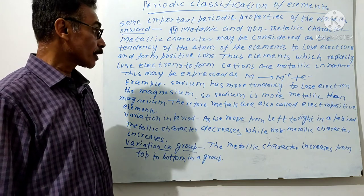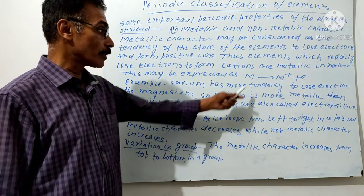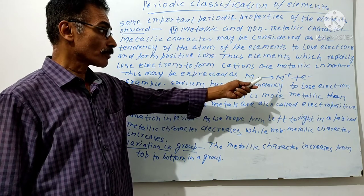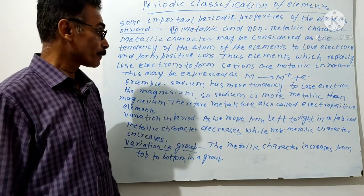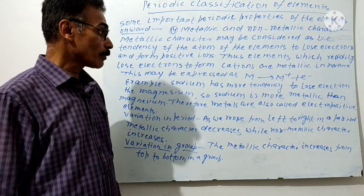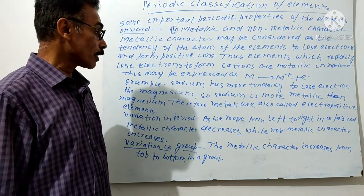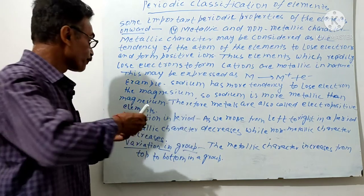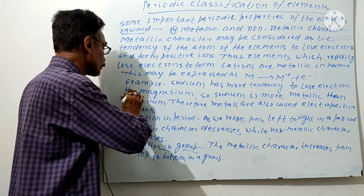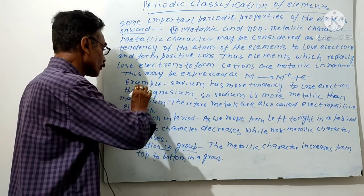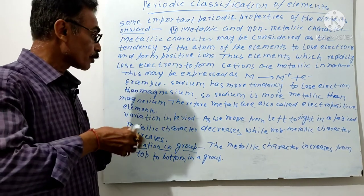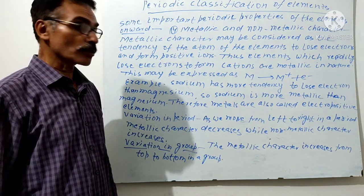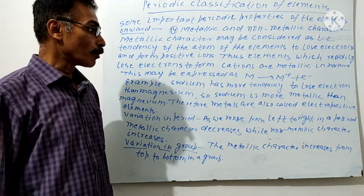This may be expressed as M is the metal, E is the electron, losing the ion. An example: Sodium has more tendency to lose electrons than magnesium. So sodium is more metallic than magnesium.